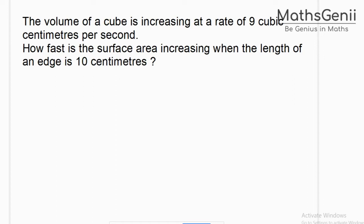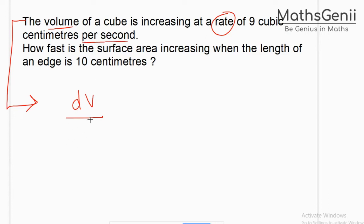The volume of a cube is increasing at the rate of 9 cubic centimeters per second. This sentence means dV/dt equals 9. The volume unit is cubic centimeters and the time unit is seconds. The second part asks: how fast does the surface area increase with the length of an edge when it is 10 centimeters?